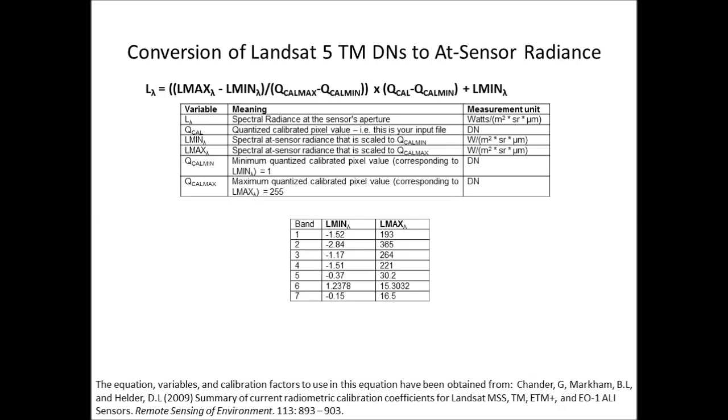Let's break the equation down and have a look at each individual part of it. First, we've got the spectral radiance at the sensor's aperture, which is going to be our unknown variable for this equation. This is what we obtain after we perform the correction—our at-sensor radiance.